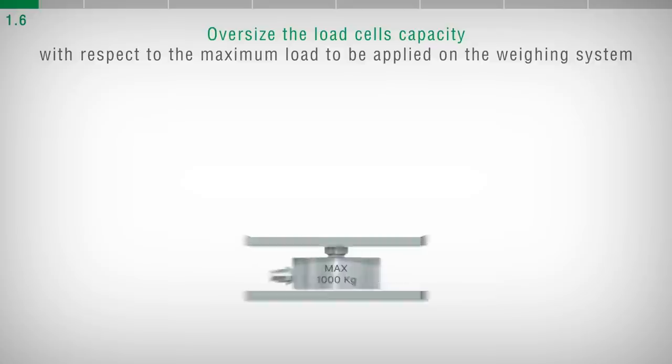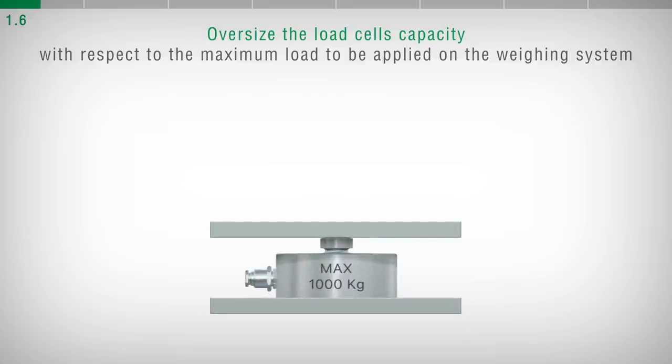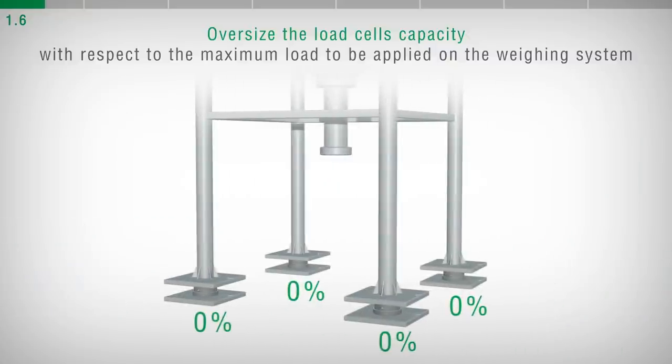For safety reasons, it is recommended to use the load cells at a maximum of 70-80% of their nominal capacity. In case of weighing structures with four supports, consider that the load will not be uniformly distributed and that 85-90% of the applied load will be distributed on just three supports.